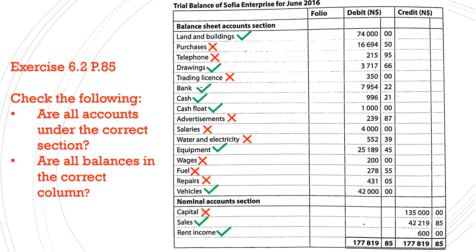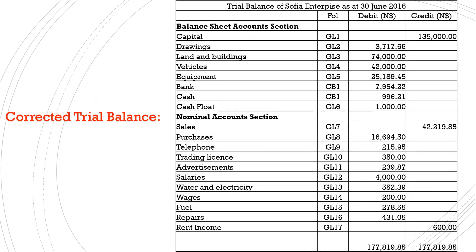Next, are all the balances in the correct column? Once you check all the balances, you'll see that the debit balances are correct and the credit balances are correct. So with this information, we can now prepare the correct trial balance. Here you have the correct trial balance. Pause the video to mark your homework.